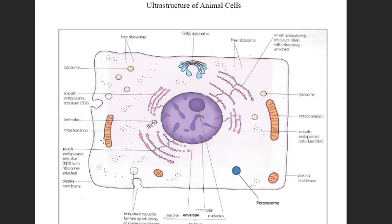Mitochondria are present in both animal and plant cells. In animal cells, there is also an organelle called the lysosome, which contains enzymes required for the hydrolysis of molecules. All these organelles are present in an animal cell.